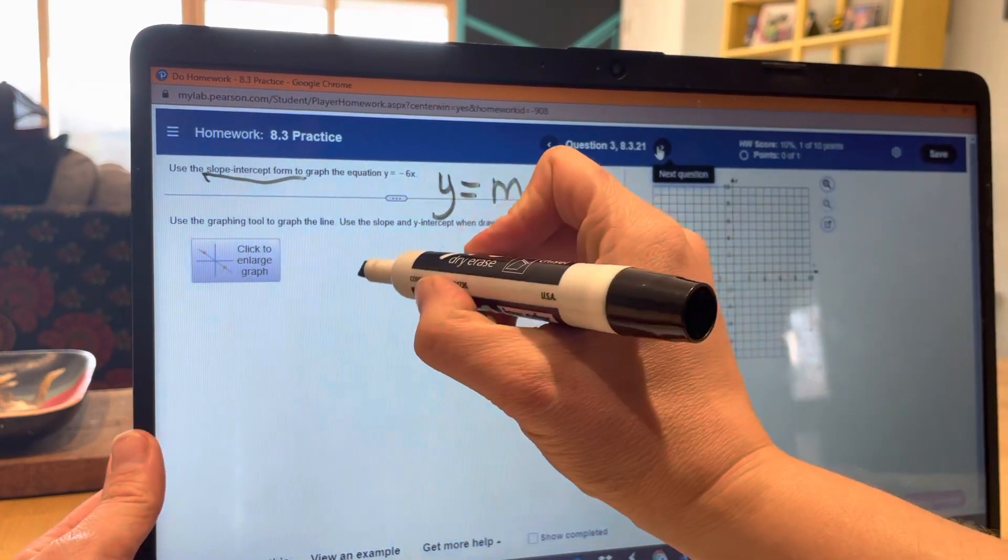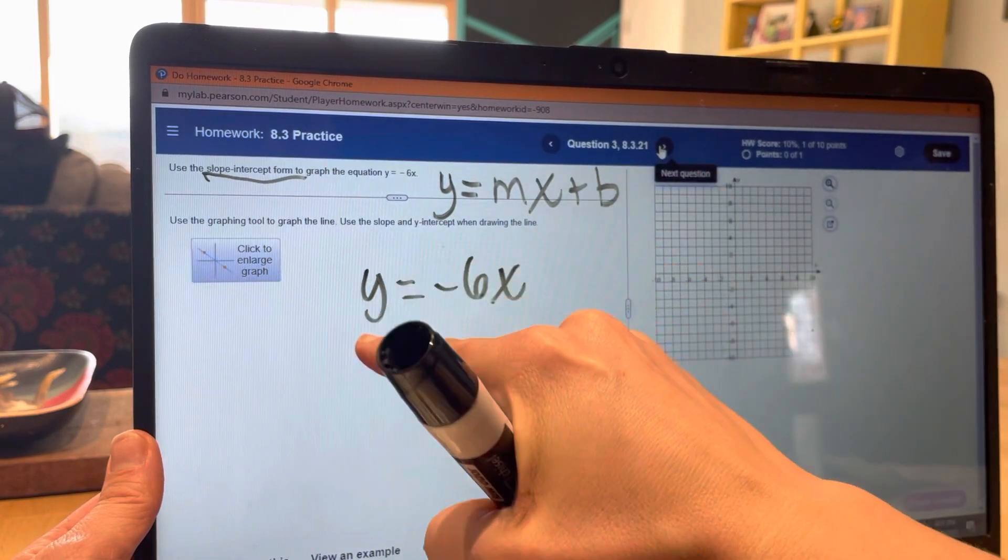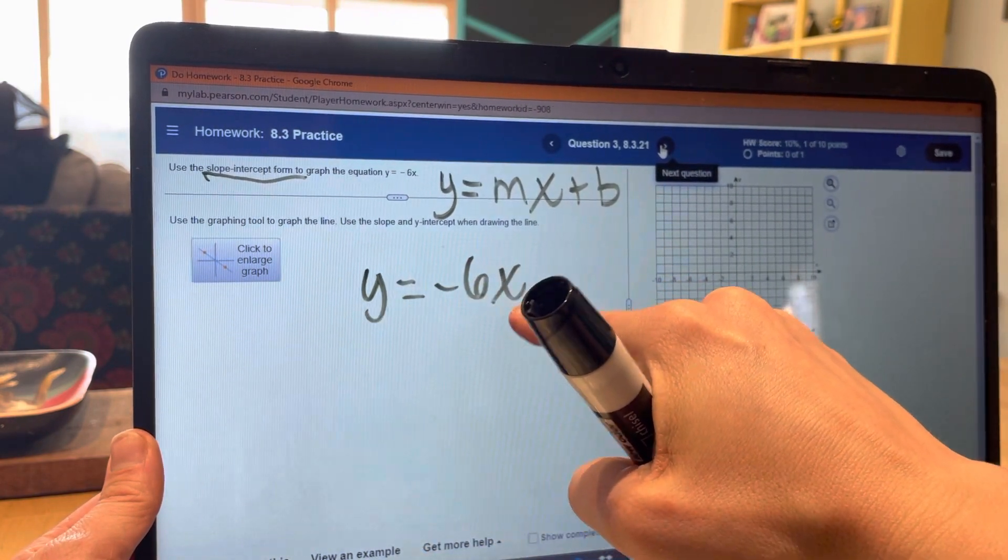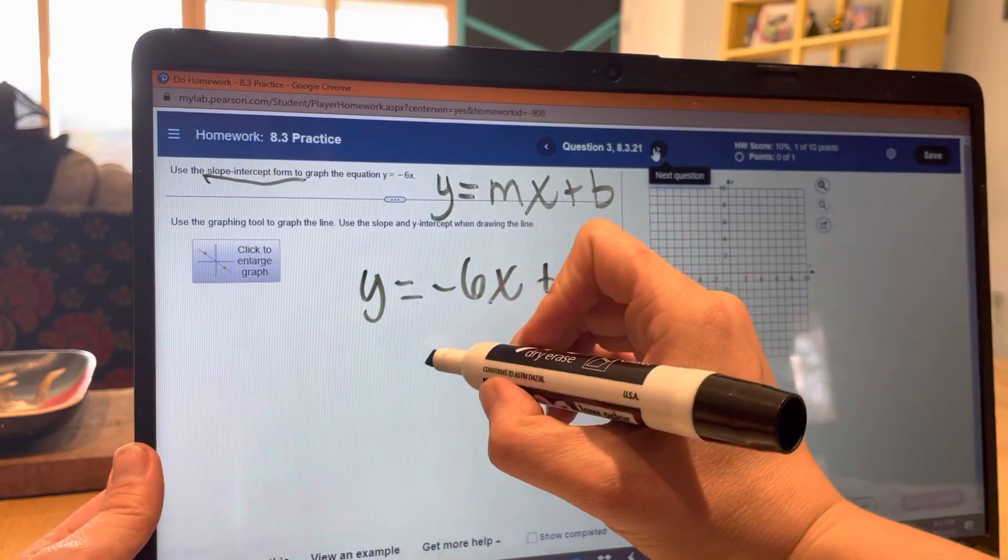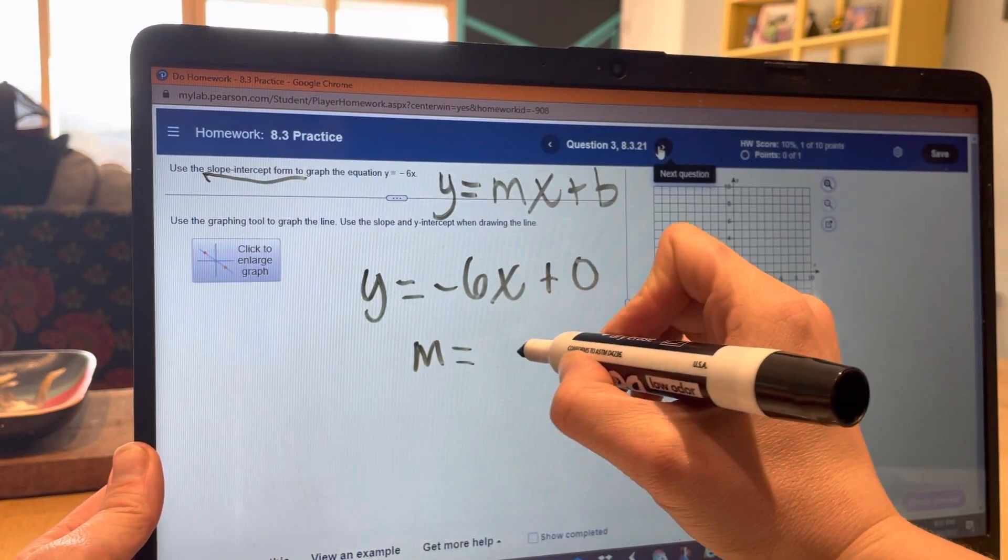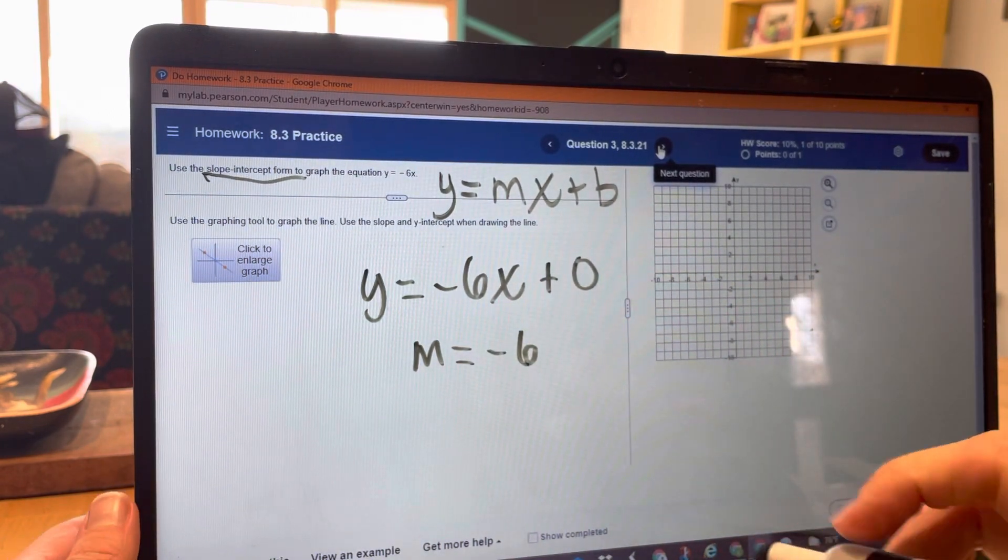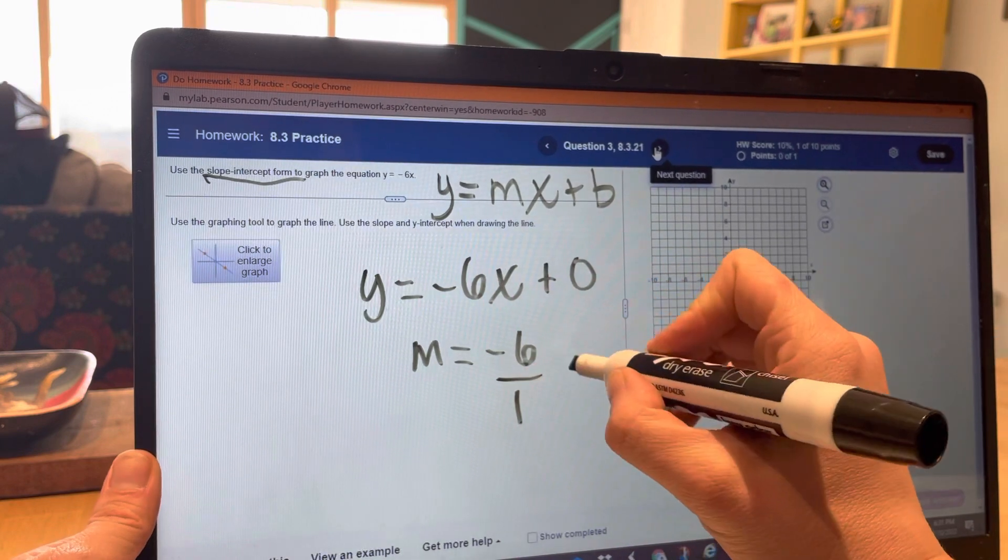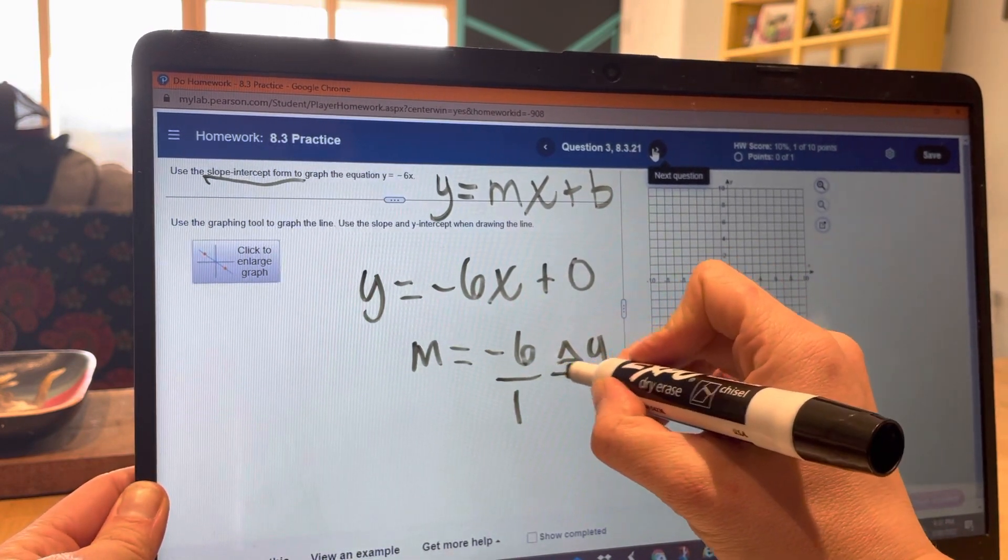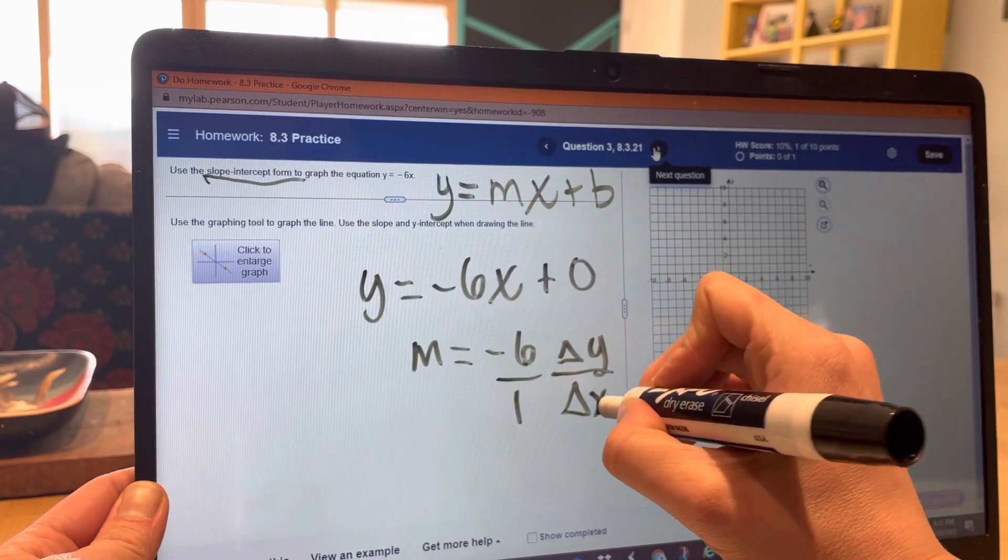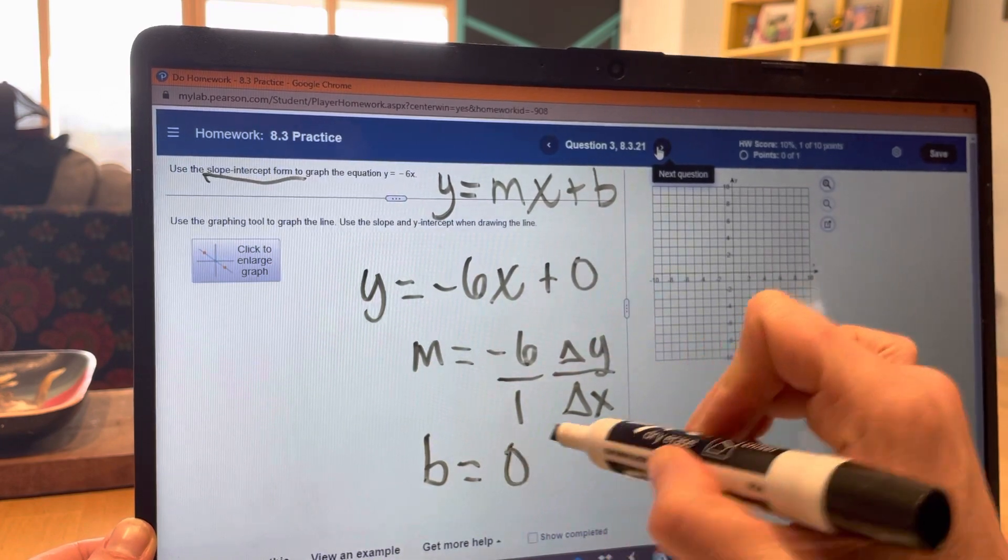So this equation is already written in slope-intercept form for us, y equals mx plus b. There's no b-value, so it's understood that there's a 0. So my slope, or my m, is negative 6. Remember that slope is a fraction or a ratio of change in y over change in x. And my b-value, or my y-intercept in this case, is 0.